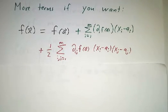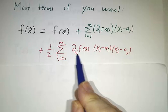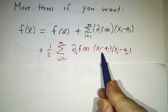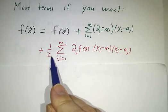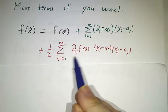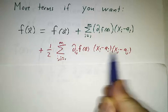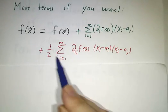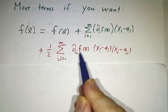And if you want the second order term, you need to take second derivatives. Derivatives in the i and j directions, multiplied by the change in x in the i-th direction, the change of x in the j-th direction, and multiply by a half. When we only had one variable, that was the second derivative times (x-a) squared. i and j were both 1. When we have multiple variables, we have a lot of terms here. i and j both go from 1 to m. They're allowed to be different. They're allowed to be the same.